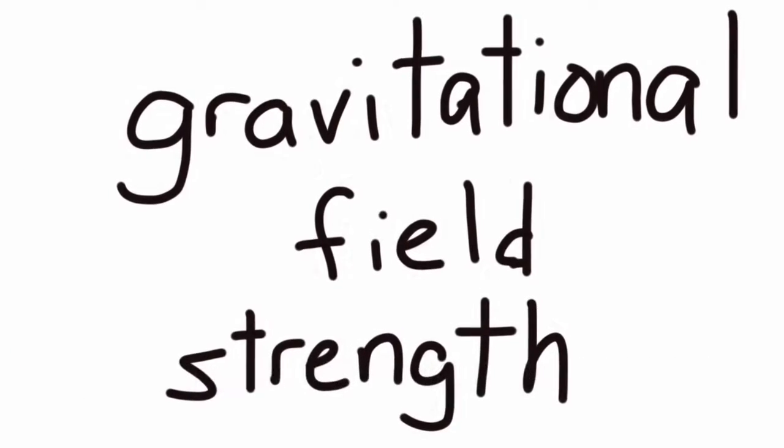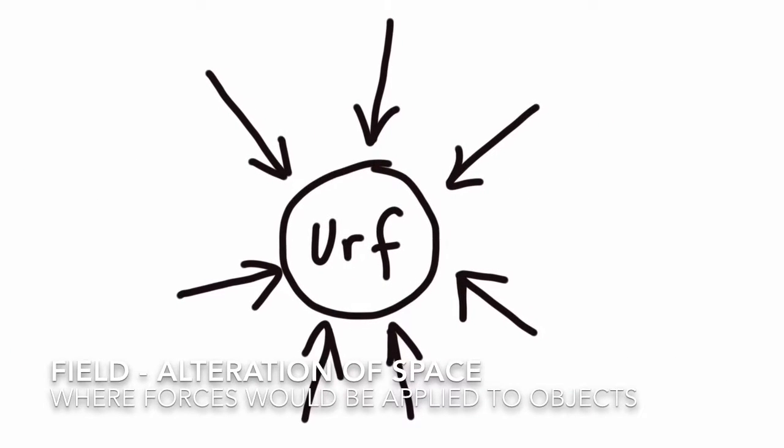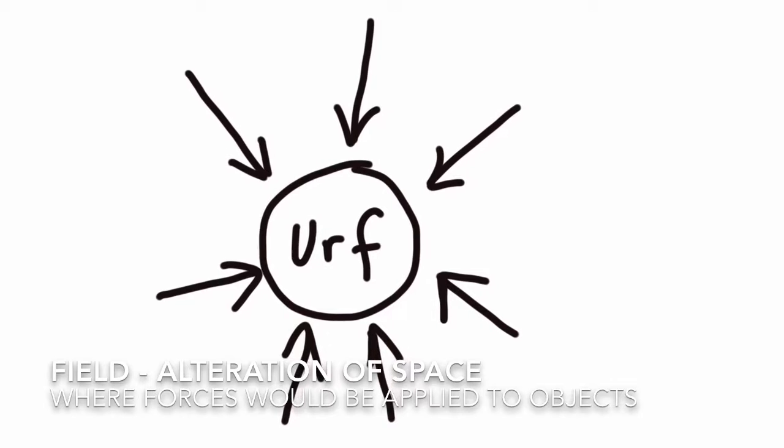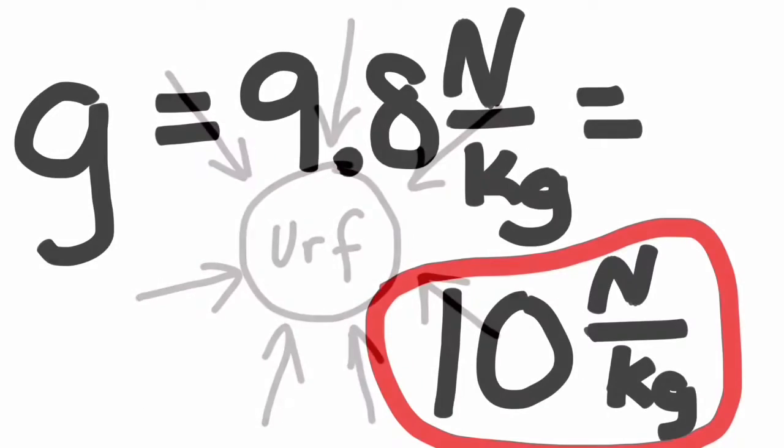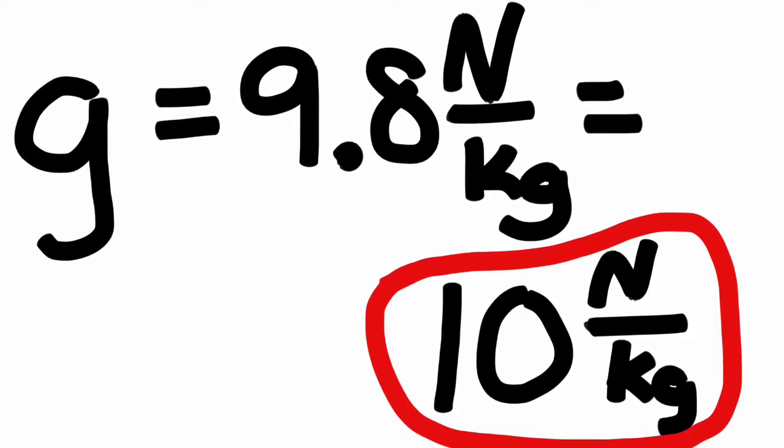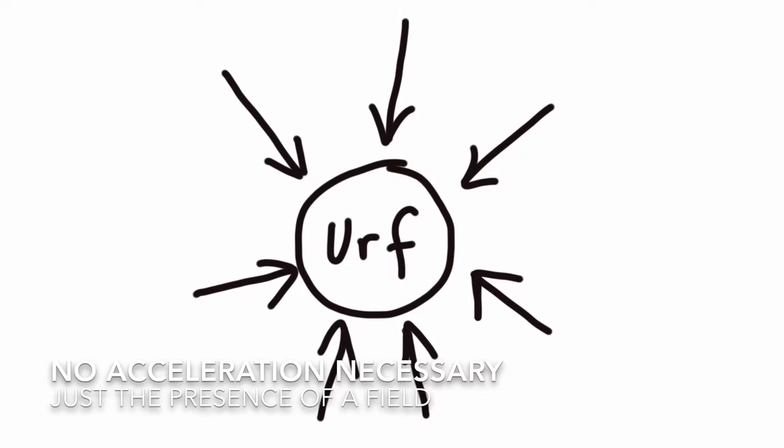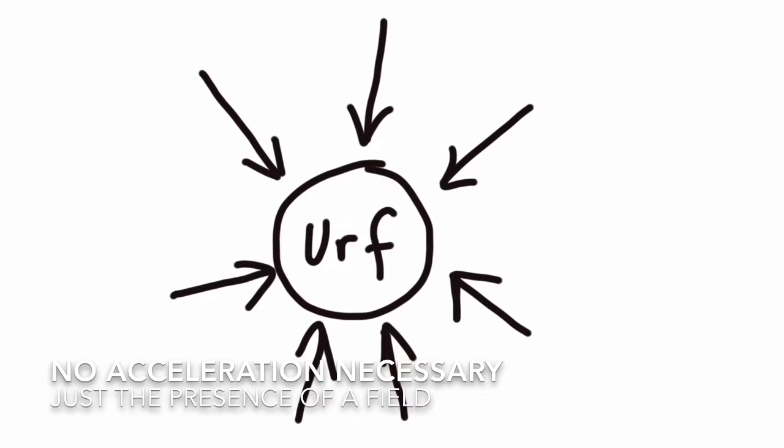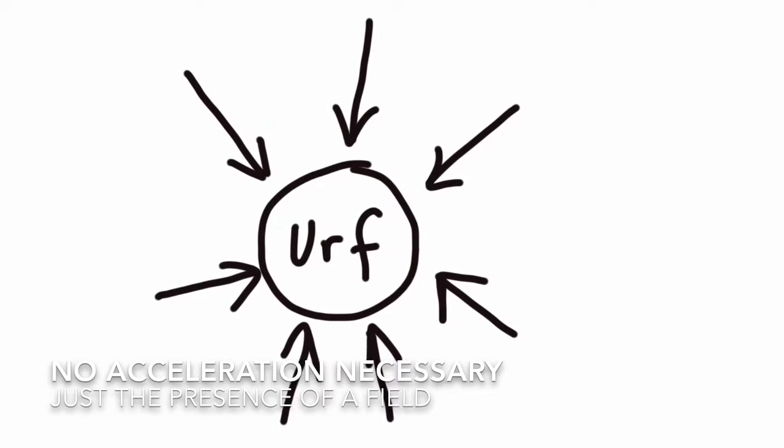There is this gravitational field around all objects, like all of them, an alteration of space where forces would be applied to objects placed there. It has a value of about 9.8 Newtons per kilogram. The object doesn't have to be accelerating. It can just sit there. It's just in the field, and it has a force acting on it because of the gravitational field.